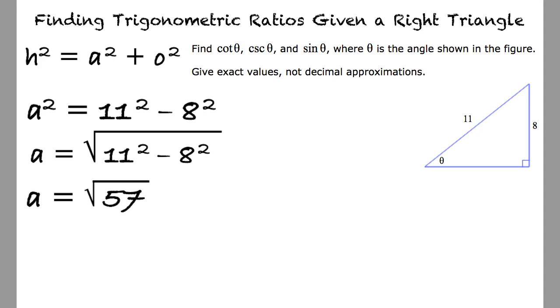Now that we have solved for all three sides of the right triangle, we can substitute those values to find the trigonometric ratios, right? Definitely.